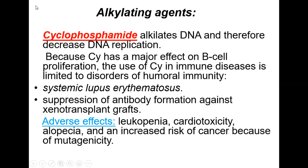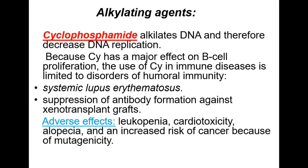Cyclophosphamide stops DNA replication and has a major effect on B-cell proliferation, so its use in immune diseases is limited to disorders of humoral immunity. It can treat autoimmune disorders such as systemic lupus erythematosus and scleroderma, suppress antibody formation against xenografts, and is used in cancers such as breast cancer and lymphomas.